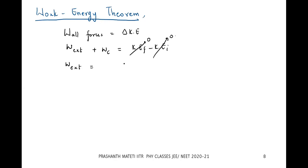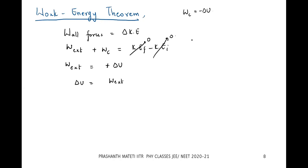By the nature of conservative forces, work done by the conservative force equals minus delta U. Substituting, W_external equals delta U. So to calculate delta U, we need to calculate the work done by the external force.